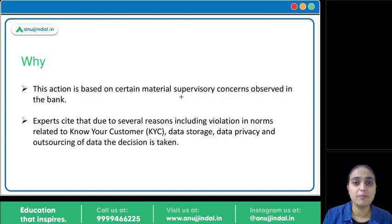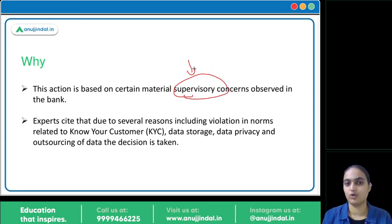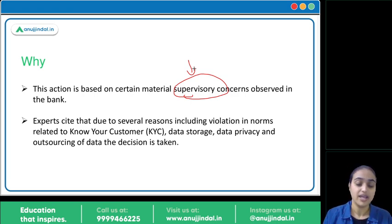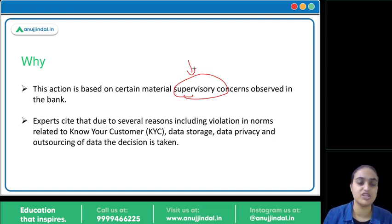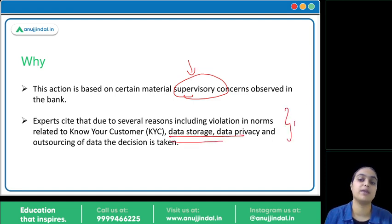RBI has not shared many details — it has only mentioned that there are supervisory concerns with the bank's functioning. Experts say the restrictions were likely imposed because the bank has not adhered to KYC norms and has not followed data storage, data privacy, and outsourcing norms. That is the reason experts believe this decision was taken by RBI.